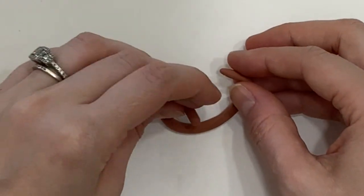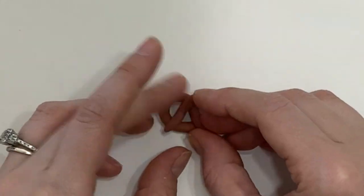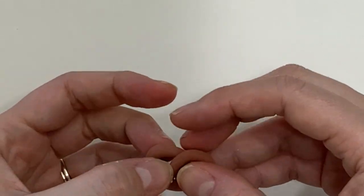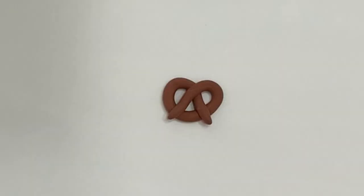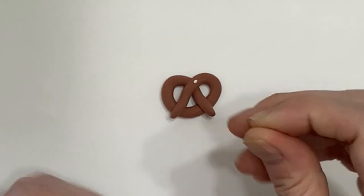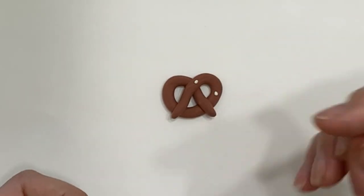For the pretzel, I simply take my coil and I crisscross it. Wherever the Model Magic touches, it's going to go ahead and stick. No glue is needed. So after I make my pretzel, I can add very tiny little pieces of white to resemble the salt. As long as I press them on there, they will stay. Again, you don't need any glue.